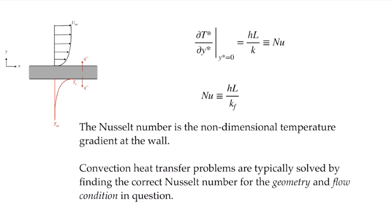Earlier we solved for the convection coefficient as a function of the heat flux at any location. When we want to solve a heat transfer problem without knowing the full field, we find the correct Nusselt number for the geometry and flow condition — for example, whether the flow is laminar or turbulent. From that Nusselt number we calculate the convection coefficient and solve our convection heat transfer problem.